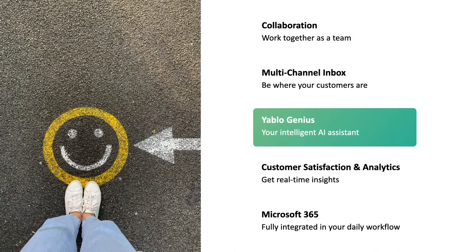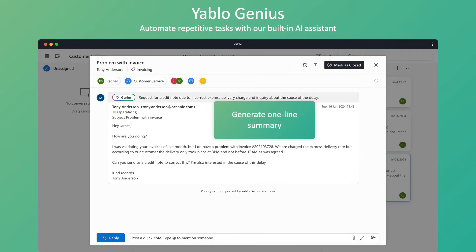While the collaboration and multi-channel inbox features of Yablo contribute to resolving customer inquiries faster, the task of processing incoming messages remains time consuming. Each incoming message requires you to decide on the most suitable team member for ownership, assess its priority, and potentially set a due date. This is where Yablo Genius, our built-in AI assistant, comes into play. Let me show you how Yablo Genius improves your workflow.